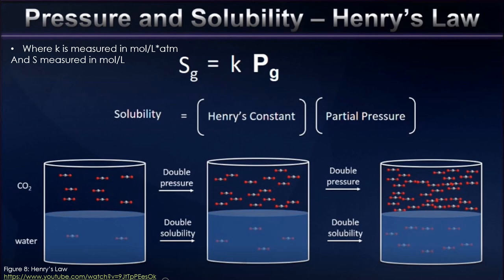This is shown in the figure below. As we double the pressure above the solution, we also double the number of molecules dissolved in the solution. But what is k? k in this context is referred to as Henry's constant, measured in moles per liter atmosphere, and the value changes according to the properties of the solute and solvent involved in the reaction. Therefore, to calculate the solubility of a gas in a liquid using the Henry's Law equation, we first must know what the k value between the two components is.